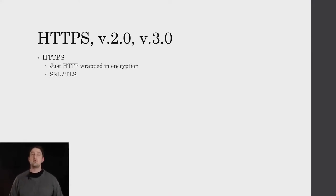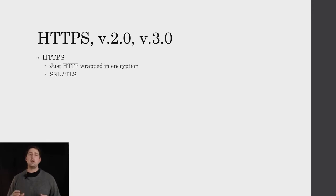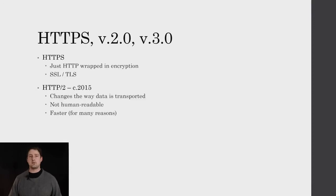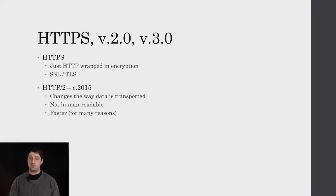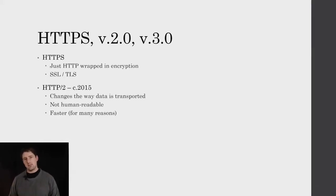We also need to discuss HTTPS, HTTP 2.0, and HTTP 3.0, though they're not specifically required for this talk. HTTPS is just HTTP — a human readable protocol — wrapped in a layer of encryption, usually SSL or TLS, with TLS 1.3 being one of the most recent. HTTP 2.0 was standardized in 2015. What you need to understand about it is that it changes the way data is transported and how headers are communicated between client and server. There are still headers, still a message body, still key-value pairs — they're just compressed, and it's faster for a number of reasons.